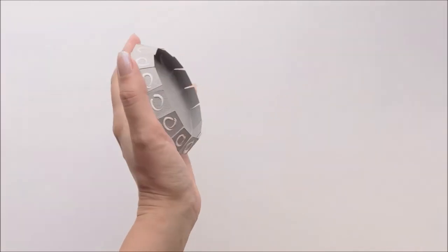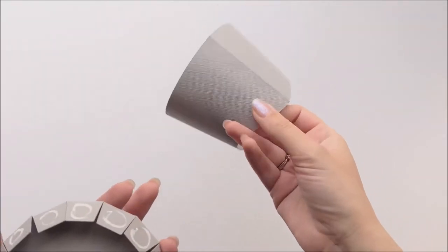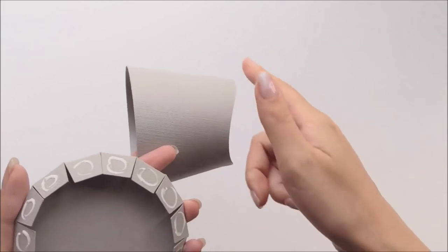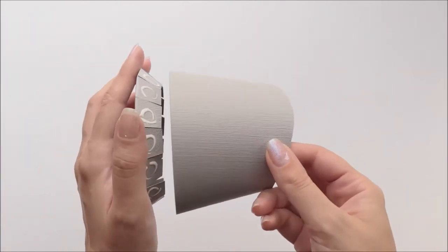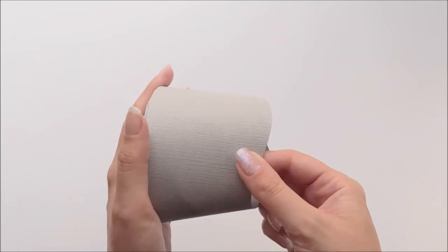After the glue has been applied to each of the tabs, you're going to take your crown piece. And the crown, this wavy part is the bottom, this flat part is the top, so you're going to put the top of your hat on the top of your crown.